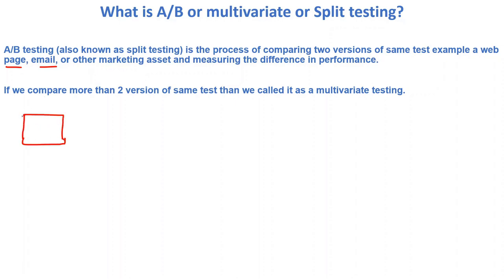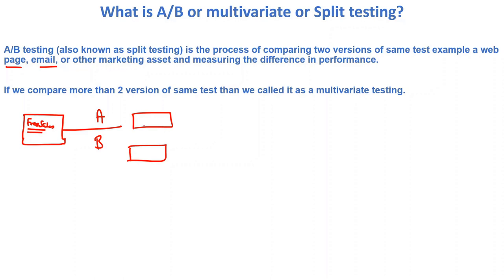For example, let's say this is your web page and you want to test whether this web page will perform better in terms of user experience or not. So what you will do is create two web pages — version A and version B — and in this way you compare two versions of the same test.